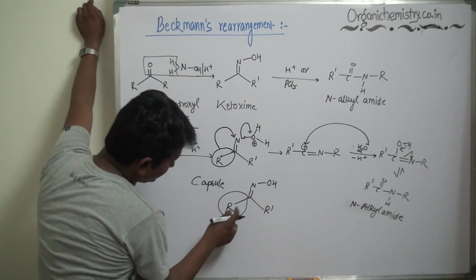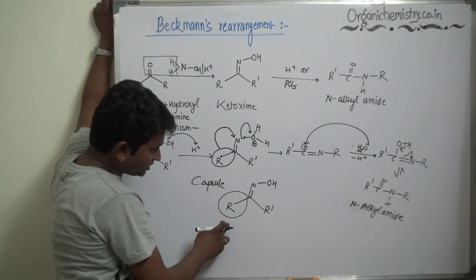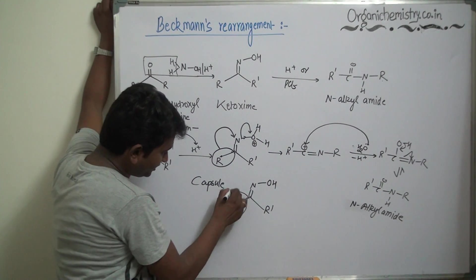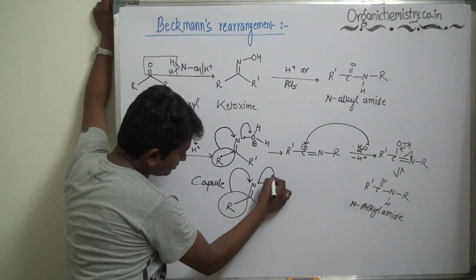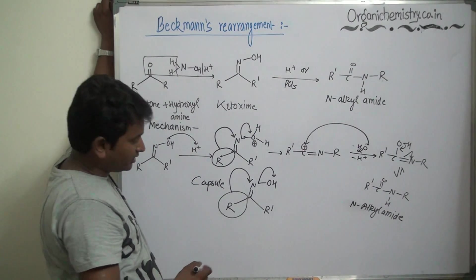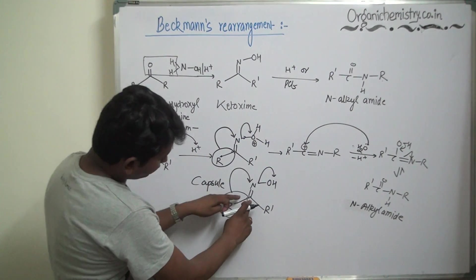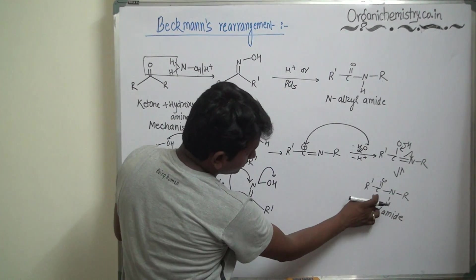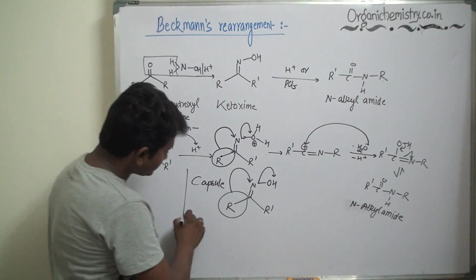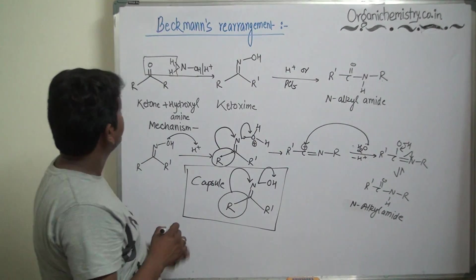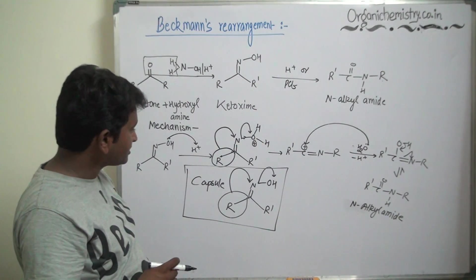That is, the alkyl group which is anti to the OH will migrate from carbon to nitrogen. And this which goes out, this particular carbon will finally be C=O, and this nitrogen will attach with the R. So this is the basic behind the Beckmann's rearrangement.